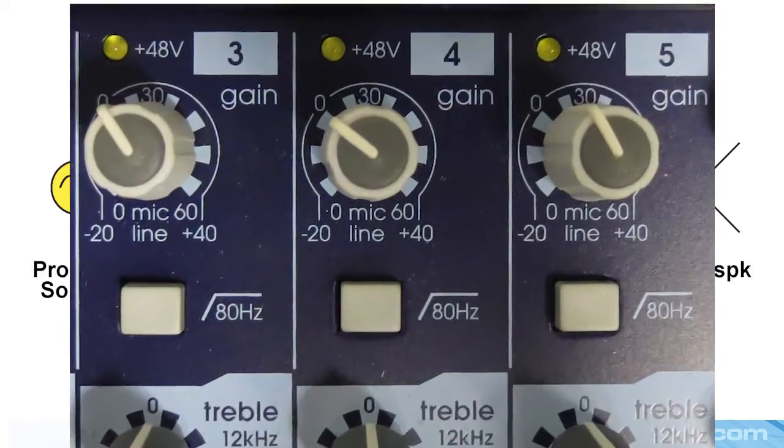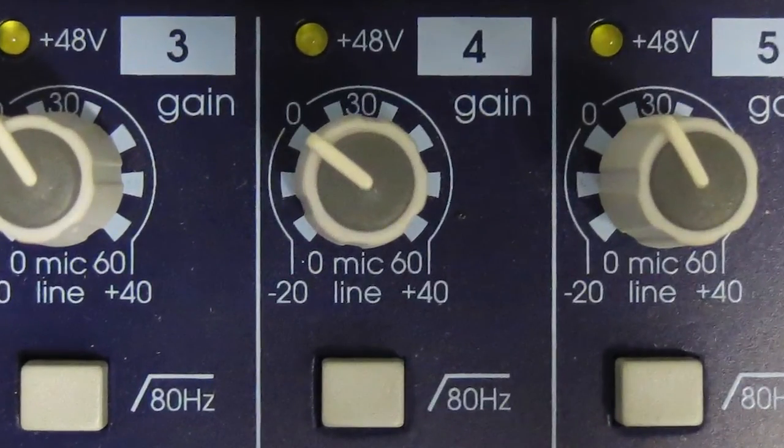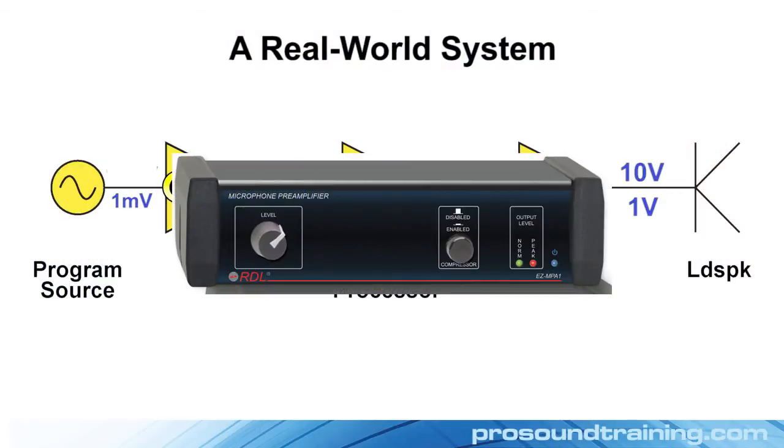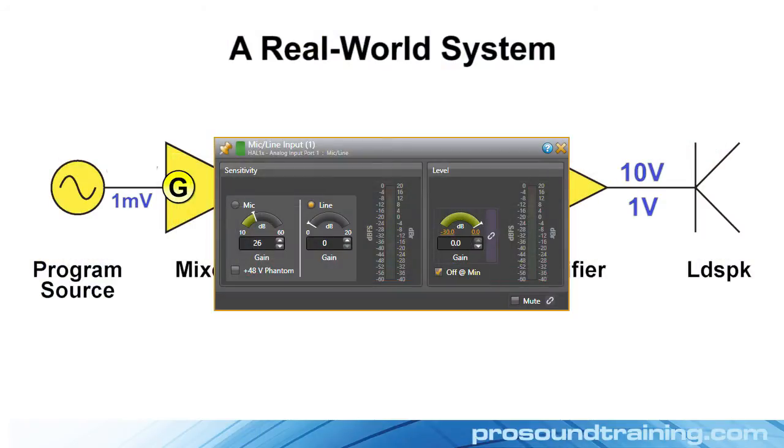This pre-amplifier may be built into the mixer itself, or it may be a standalone component. It could even be the input block of a digital signal processor, but you have to have some gain to get the mic level signal up to line level.